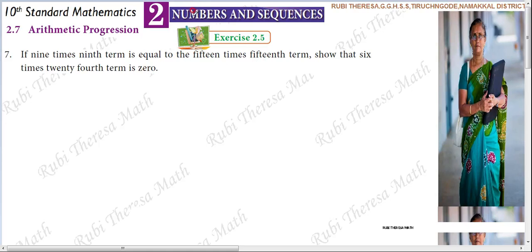Exercise 2.5, 7th sum, based on arithmetic progression. If 9 times the 9th term is equal to 15 times the 15th term, show that 6 times the 24th term is 0.